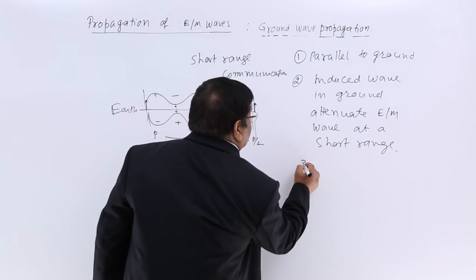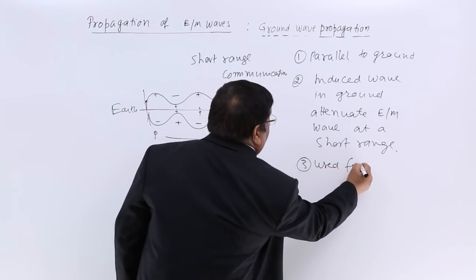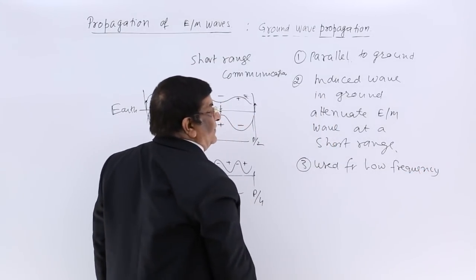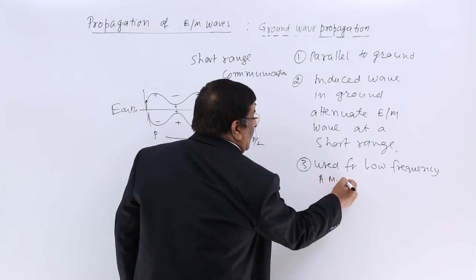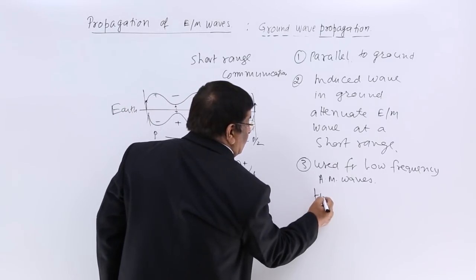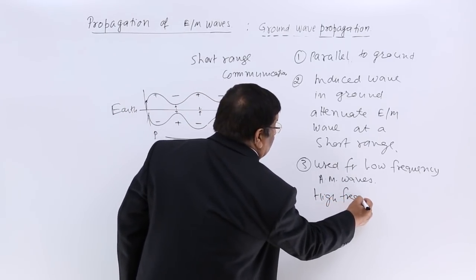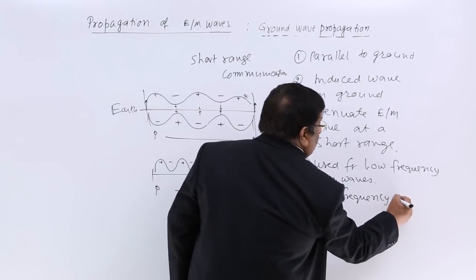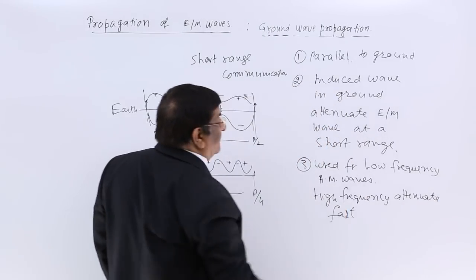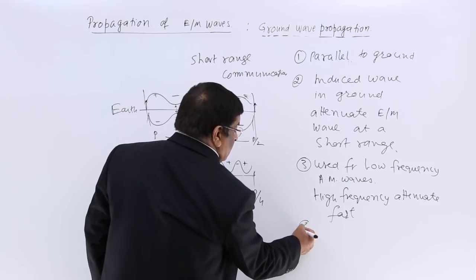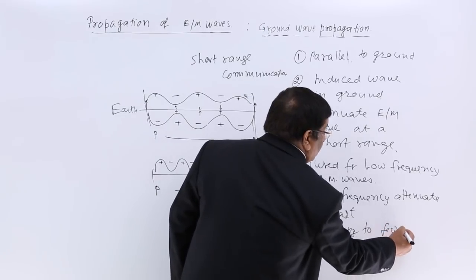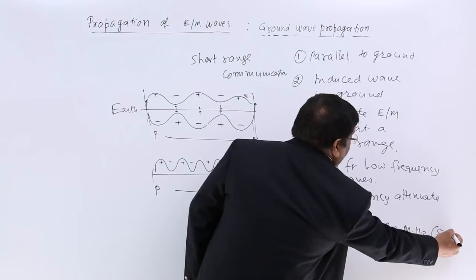Low frequency must be used for ground wave propagation, and in the low frequency range, we have AM waves. High frequency attenuates fast. The frequency range used for ground wave propagation is a few kilohertz to a few megahertz — around 5 megahertz.